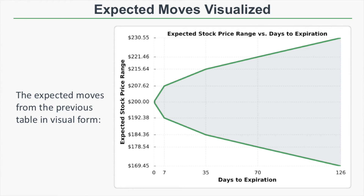This graph visualizes the numbers from the previous table. With seven days to expiration, the expected move is plus or minus $7.62, so the expected price range is between $207.60 and $192.38. At 35 days to expiration, the expected move is plus or minus $15.64, giving an expected stock price range with 68% certainty between $215.64 and $184.36. As we move further out in time, the expected range gets larger and larger — because with more time, there's more uncertainty about what news can come out and affect the stock price.